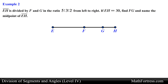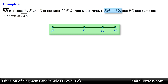Let's take a look at the next example. Segment EH is divided by points F and G in the ratio 5 to 3 to 2 from left to right. If the length of segment EH is 30, find the length of segment FG and name the midpoint of segment EH. We are given the length of the full segment and the ratio of the three smaller segments, and we are asked to find the length of one segment and identify the midpoint.